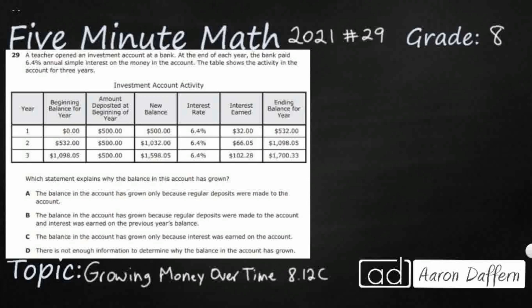Hello, and welcome to 5-Minute Math. Today we are looking at the 8th grade concept of growing money over time. This is standard 8.12c, the great state of Texas, and we are using item number 29 of the 2021 released STAR test.